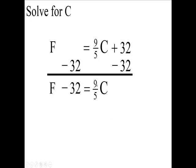Now, you have 9 fifths C, what I want to have is C, so I have to get rid of the 9 fifths. So, put parentheses around the F minus 32 first, put parentheses around that.